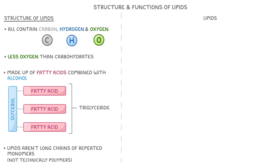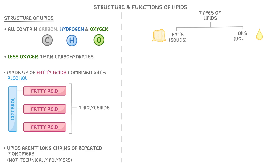You might hear the terms lipids, fats and oils being used interchangeably, but there are some key differences to remember. Fats and oils are actually just types of lipid that have different properties because of the fatty acids that they contain. For instance, fats are solids at room temperature, whilst oils are liquids.